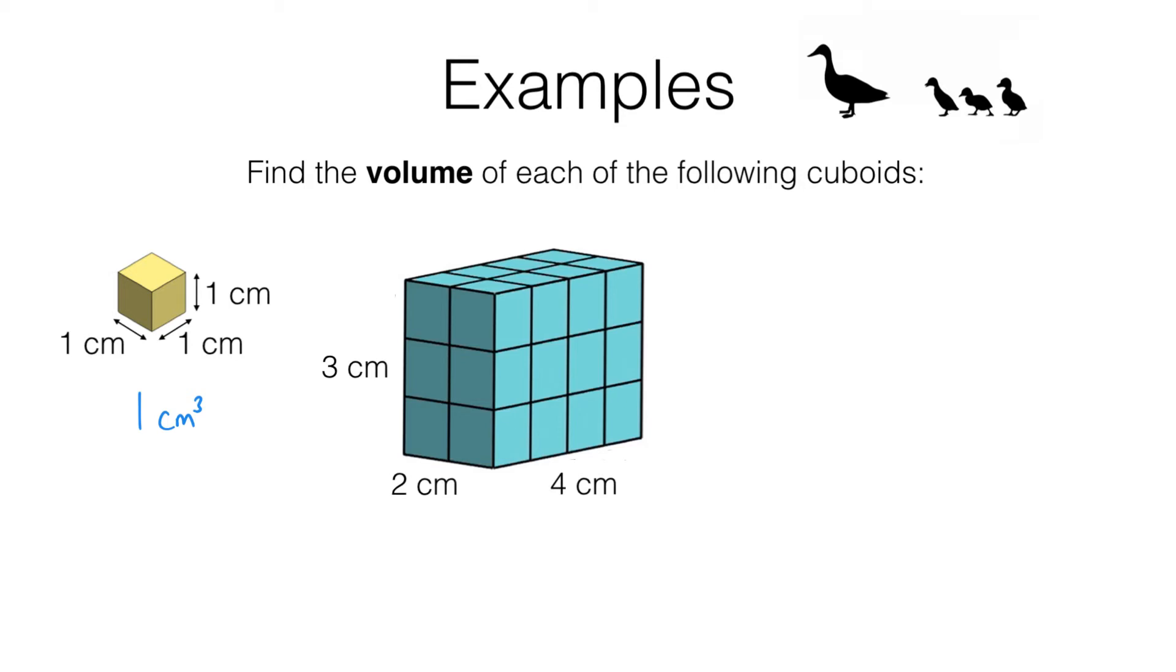Let's move on to the second cuboid. This is two centimetres long, four centimetres wide and three centimetres high. To find its volume we need to work out how many cubic centimetres would fit into a box this size. In other words, how many of these yellow blocks would fit into this.